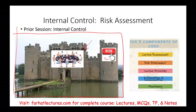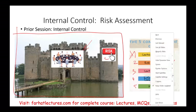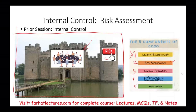Notice we have five components: one, two, three, four, and five. We are already done with the control environment, and this session will focus on risk assessment. Then we will discuss control activities, information, and communication in separate sessions.